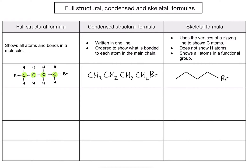Second example: there's a methyl group sticking off the side of my main chain. Let's first count the number of carbons in the main chain — one, two, three, four. I'm going to write the condensed formula going along that carbon chain, indicating what is bonded to each carbon in each case.